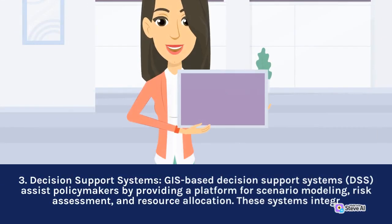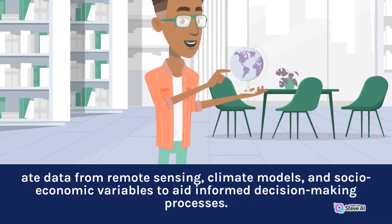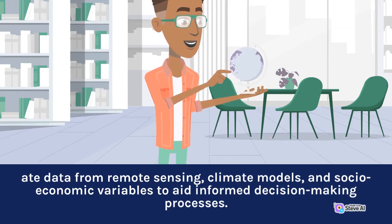3. Decision Support Systems: GIS-based Decision Support Systems (DSS) assist policymakers by providing a platform for scenario modeling, risk assessment, and resource allocation. These systems integrate data from remote sensing, climate models, and socioeconomic variables to aid informed decision-making processes.